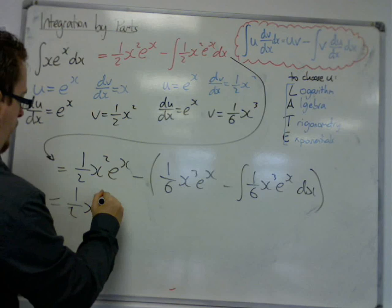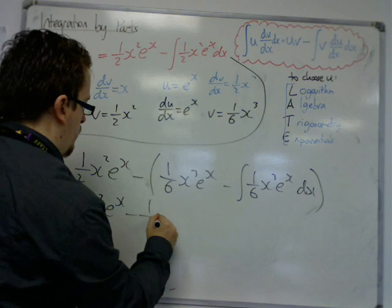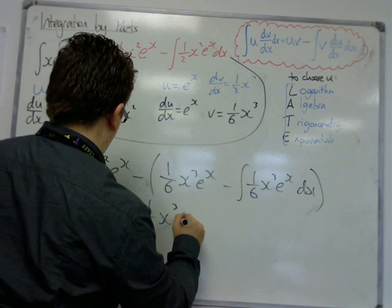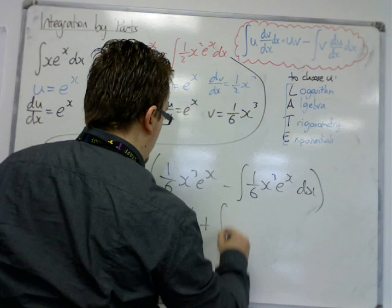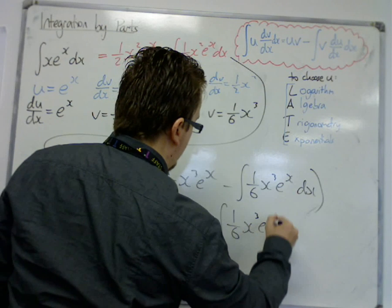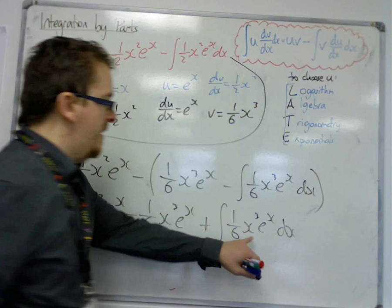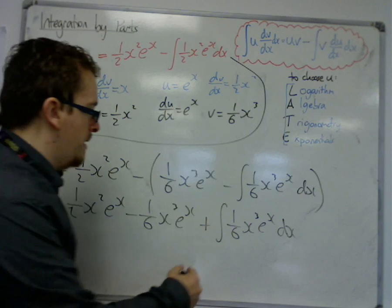One half x squared e to the x. Take away one sixth x cubed e to the x. Plus the integral of one sixth x cubed e to the x. And lo and behold, I've got to an integral here where I'm going to have to use integration by parts again.